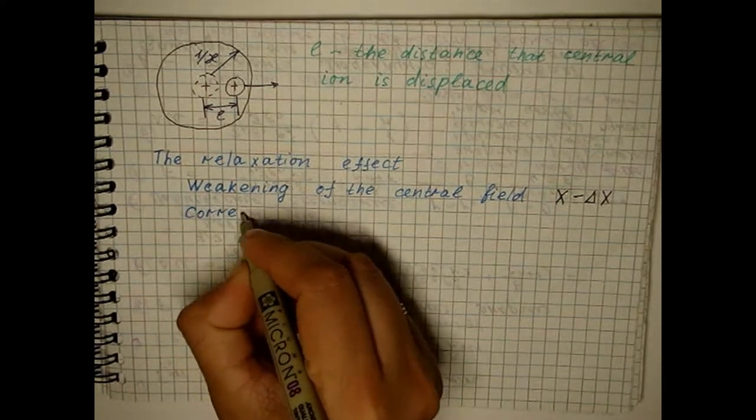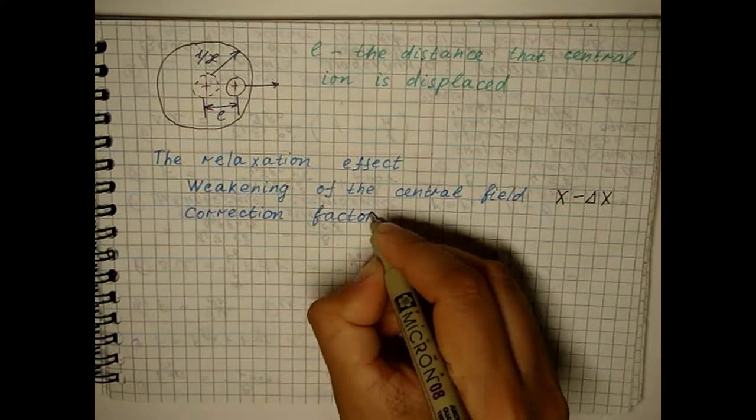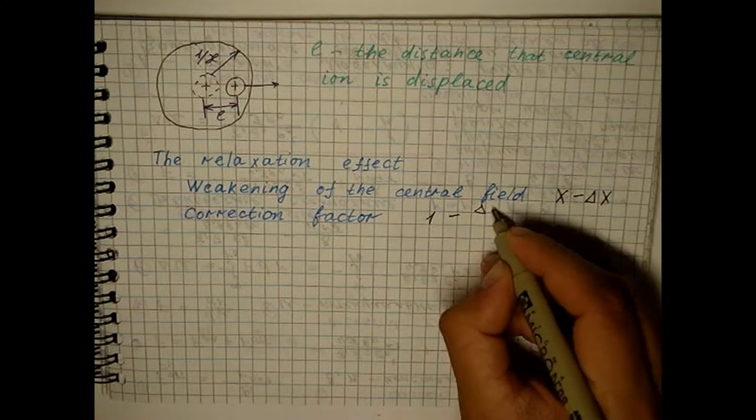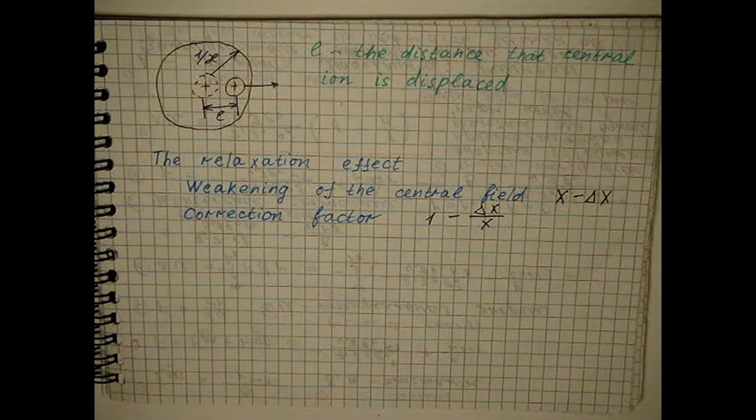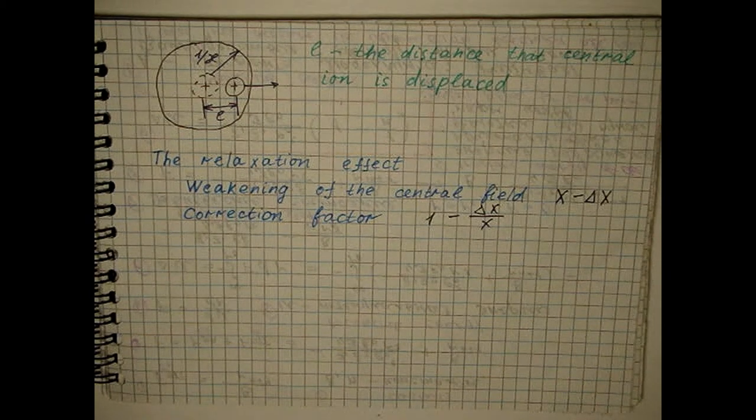Since the relaxation effect affects both the speed of movement of the central ion and the speed of movement of the ionic atmosphere, the factor will reduce the electrophoretic effect.